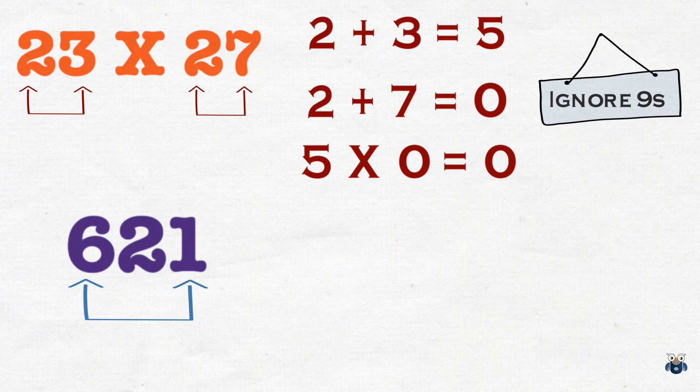Now, we look at our answer, which was 621. We add its digits. 6 plus 2 plus 1 is 9. And if you remember what we just discussed, we replaced 9 with 0.